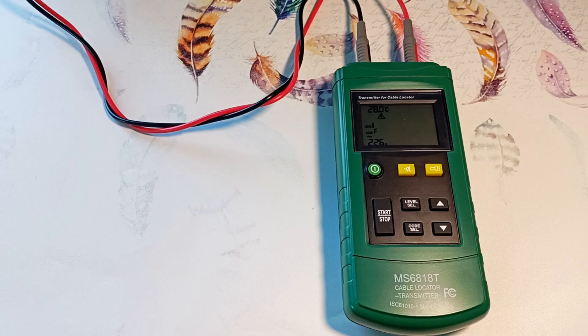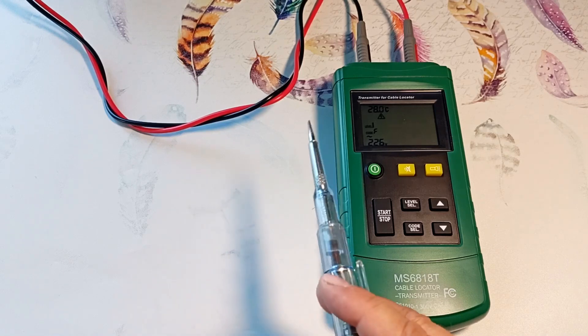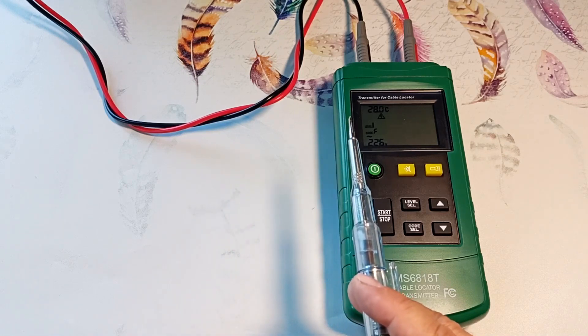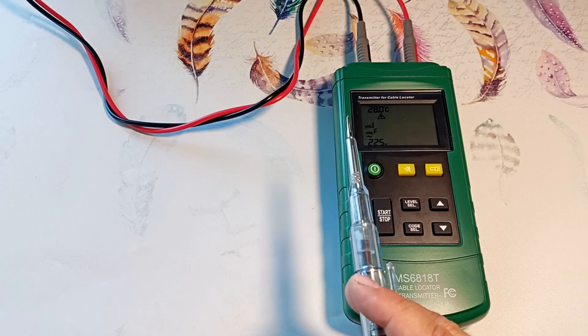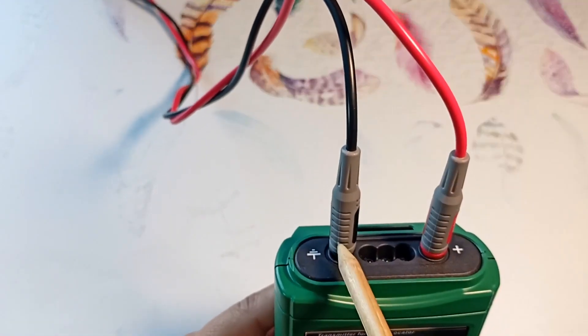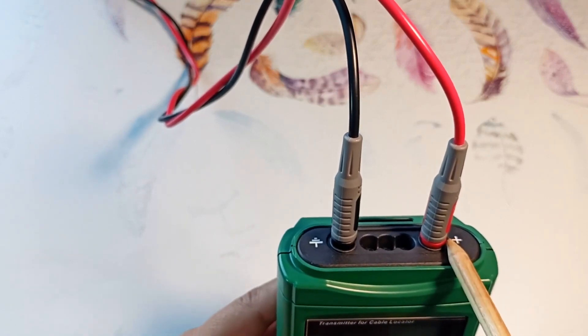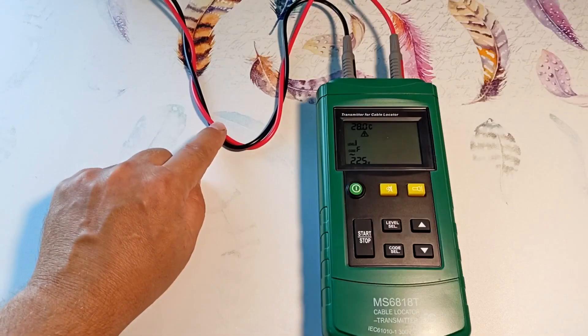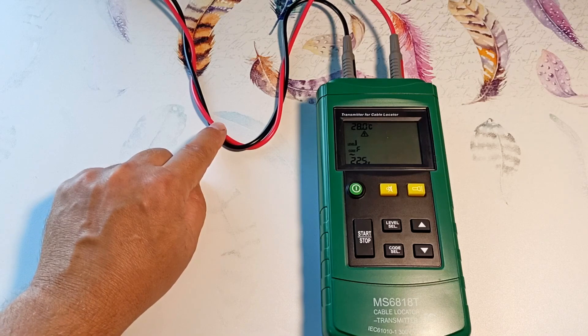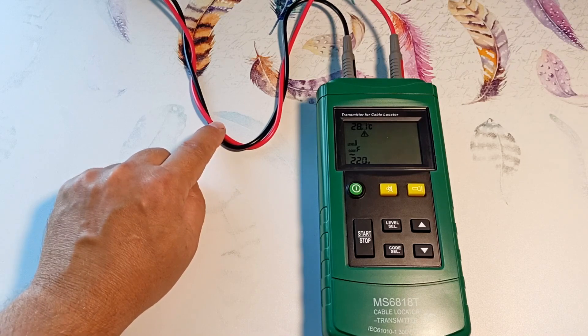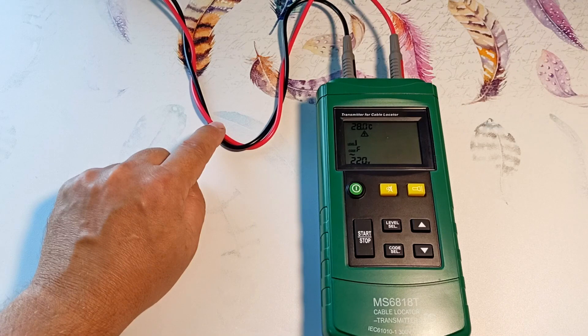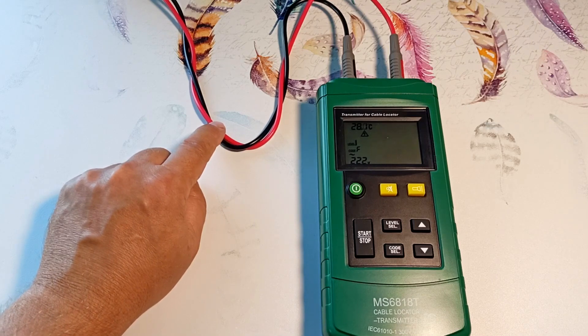Let's plug the generator into an outlet. We determine where the neutral wire is and where the phase wire is using an indicator screwdriver. We connect the grounding wire to zero. We connect the positive wire to the phase. I recommend twisting the wires together. This way the generator will emit less unnecessary noise that can interfere with the search for wiring.